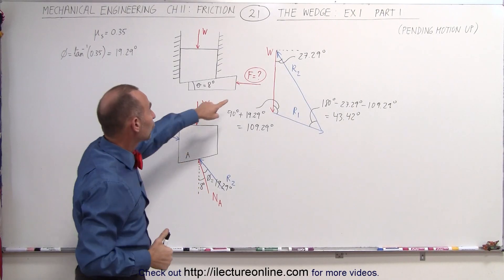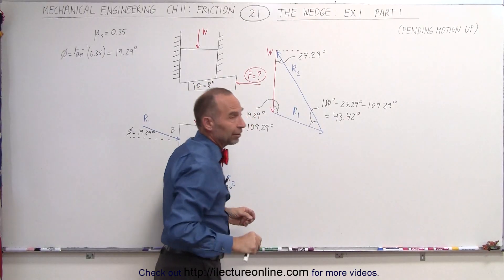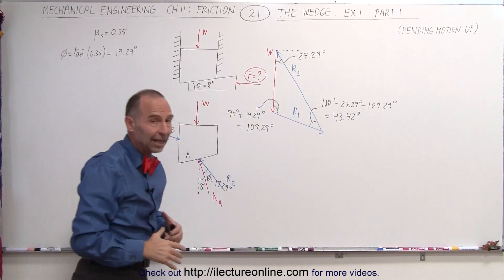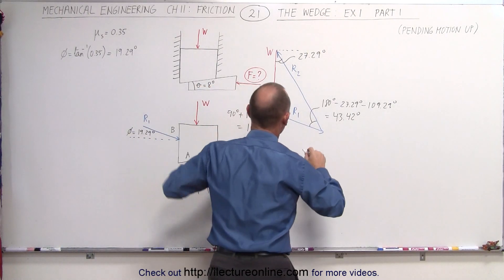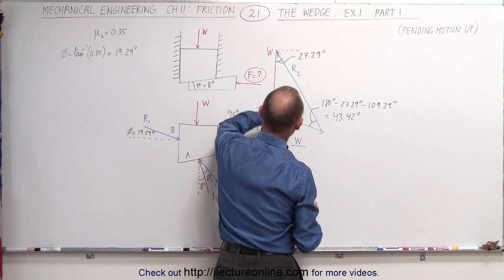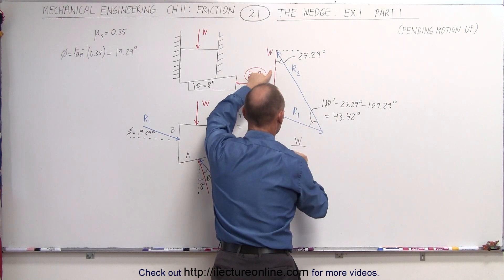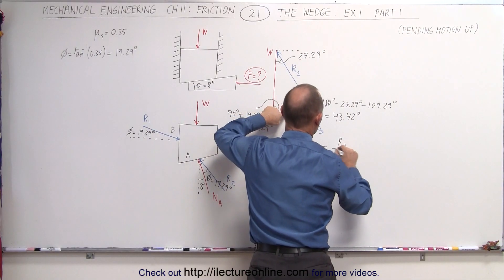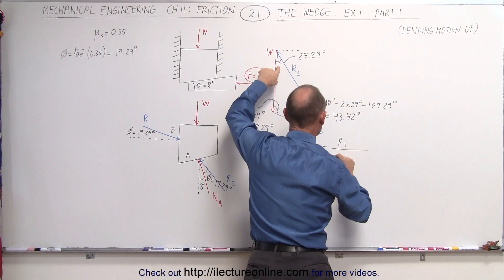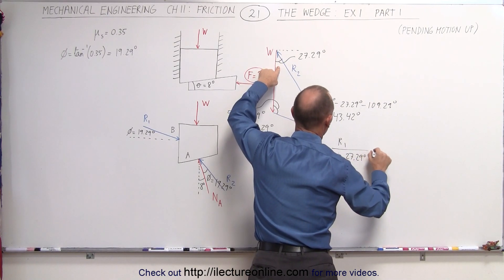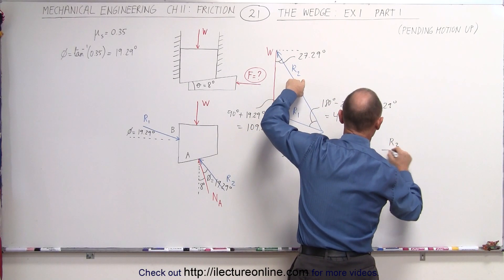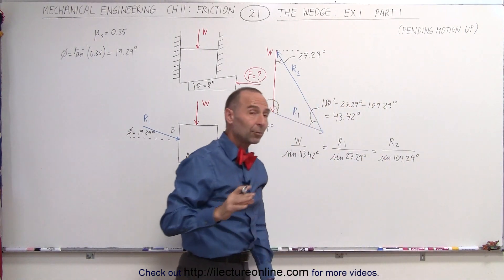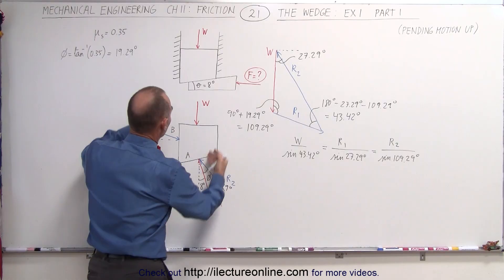Ultimately we're trying to find force F, but notice that F doesn't appear in this triangle — that comes in the second part of the problem. First, we find R1 and R2 in terms of the weight using the law of sines: W divided by sine of 43.42 degrees equals R1 divided by sine of 27.29 degrees equals R2 divided by sine of 109.29 degrees.